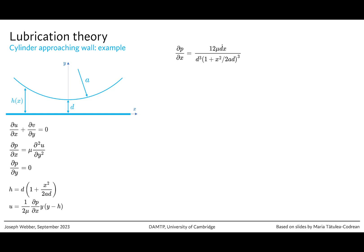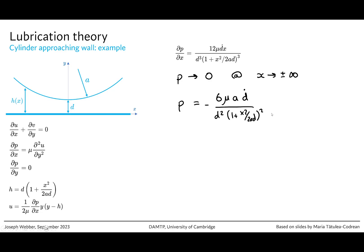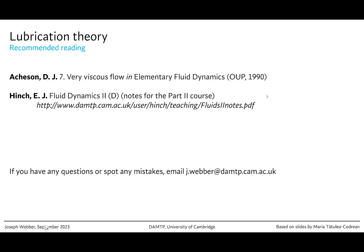Finally, assuming P goes to 0 as x goes to plus or minus infinity — no disturbance far from the cylinder — we can integrate dP/dx to find that P equals minus 6 mu A d-dot over D squared times (1 plus x squared over 2AD) to the minus 2. We've now found the pressure field. We can integrate this over a section of the wall to find the force. Lubrication theory has given us all of that for free. I hope this helped explain how lubrication theory is used.